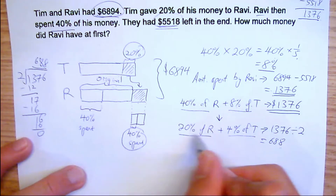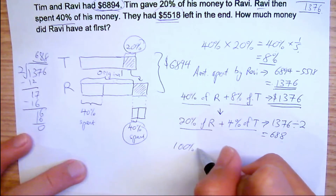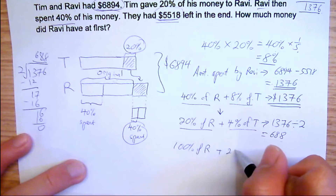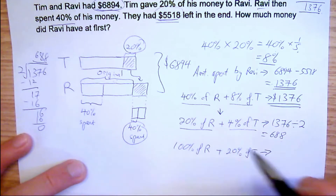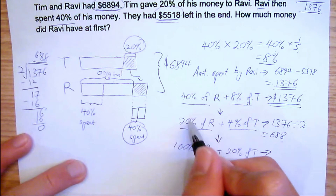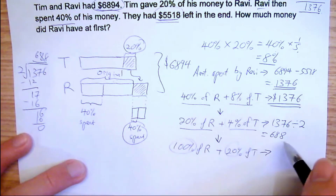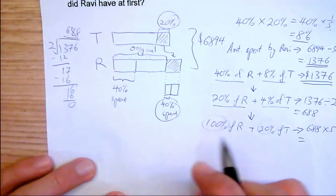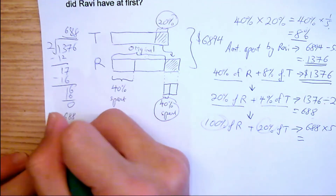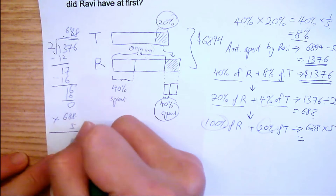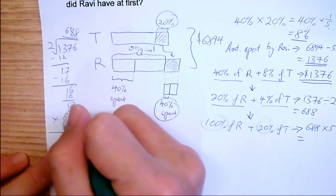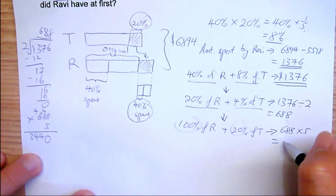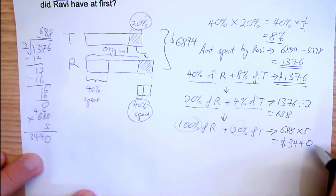Now I want to find 100% of Ravi. Multiplying by 5: 100% of Ravi plus 20% of Tim. This value will similarly be multiplied by 5, so it's 688 multiplied by 5. 8 times 5 is 40, carry 4; 8 times 5 is 40, that's 44; 5 times 6 is 30, that's 34 — so this will be $3,440.